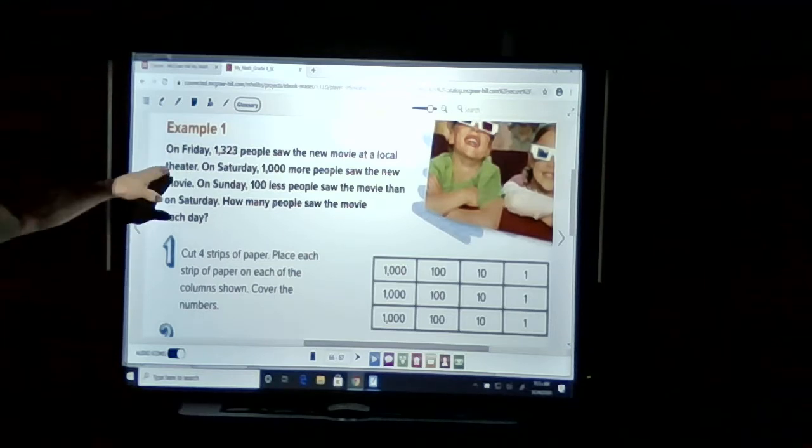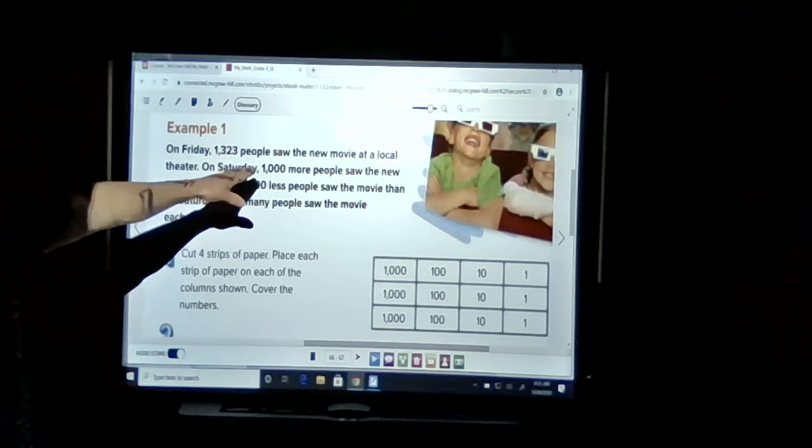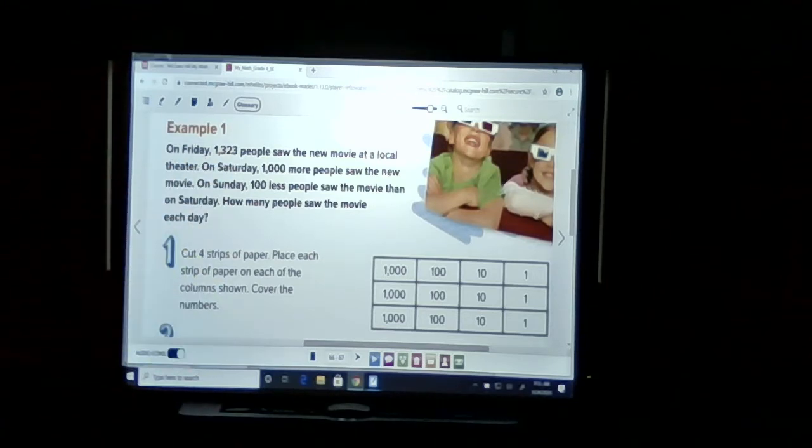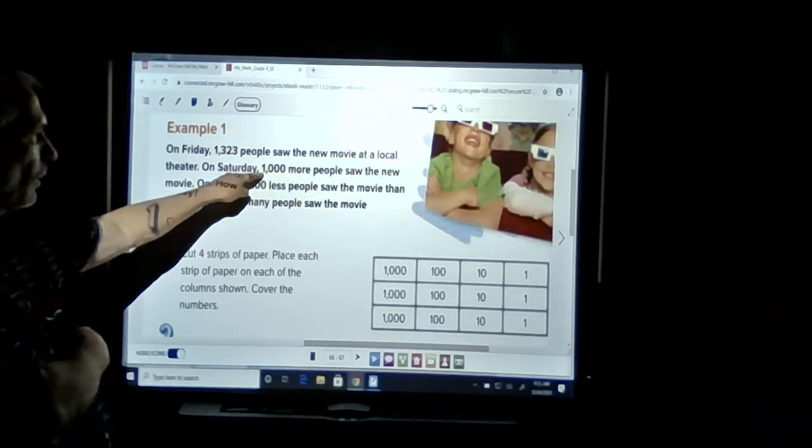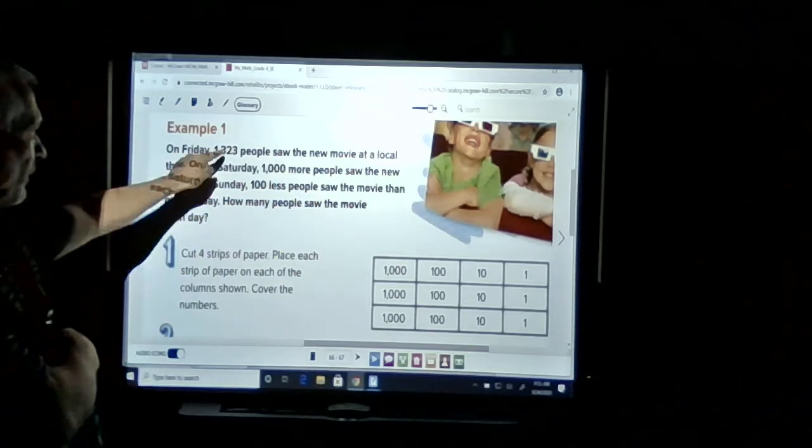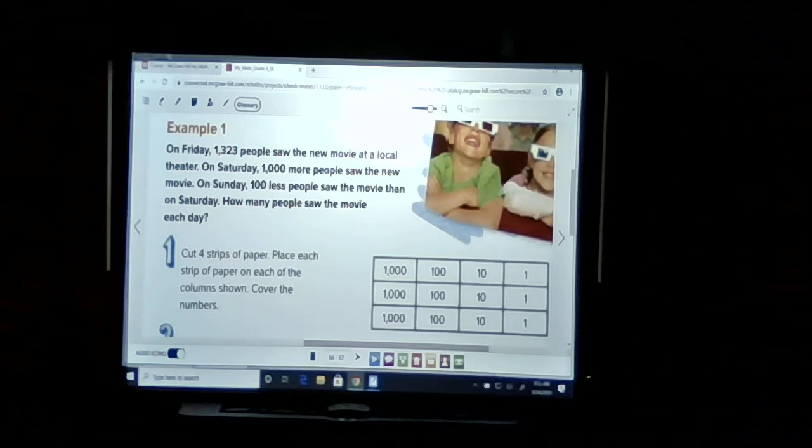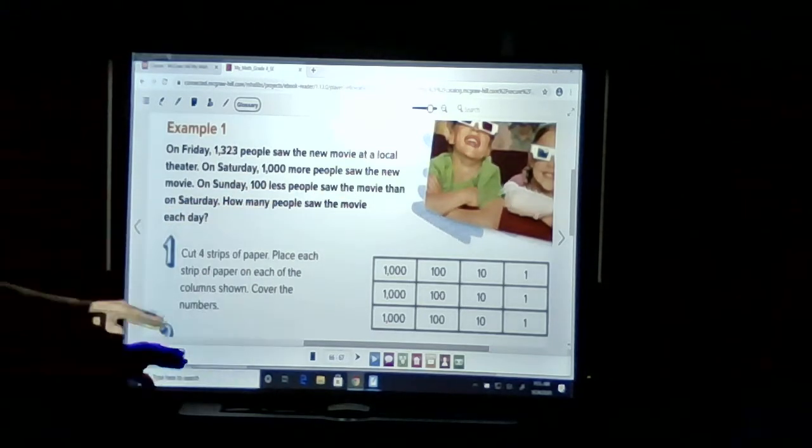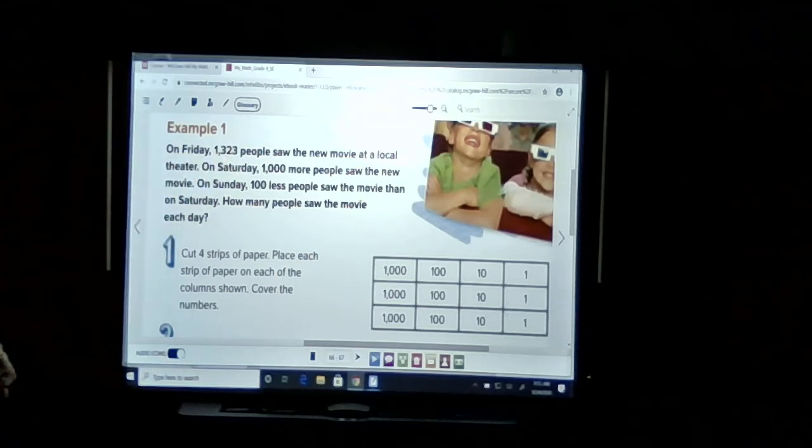Let's read example one. On Friday, 1,323 people saw the new movie at a local theater. Here's our number. On Saturday, 1,000 more people, one in the thousands, 1,000 more people than 1,323 saw the new movie. On Sunday, 100 less. We're going to take away 100 people saw the movie. We'll first have to add 1,000 to Friday, and then we'll have to take 100 off from that total to find out how many people saw the movie on Sunday. Four strips of paper, I'm going to switch to the dock camera and talk from a distance. You're ready with your strips, and let's switch.